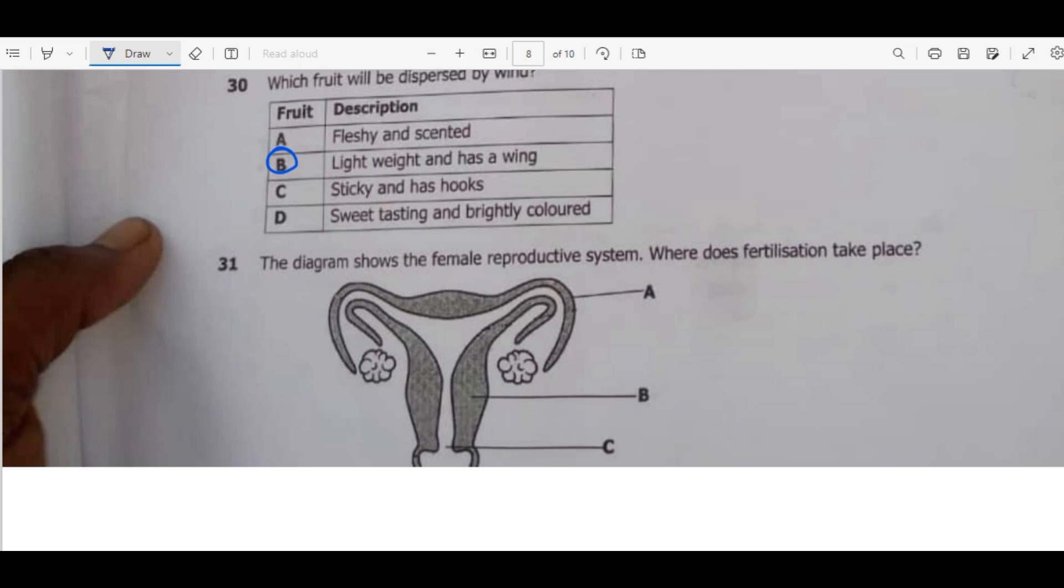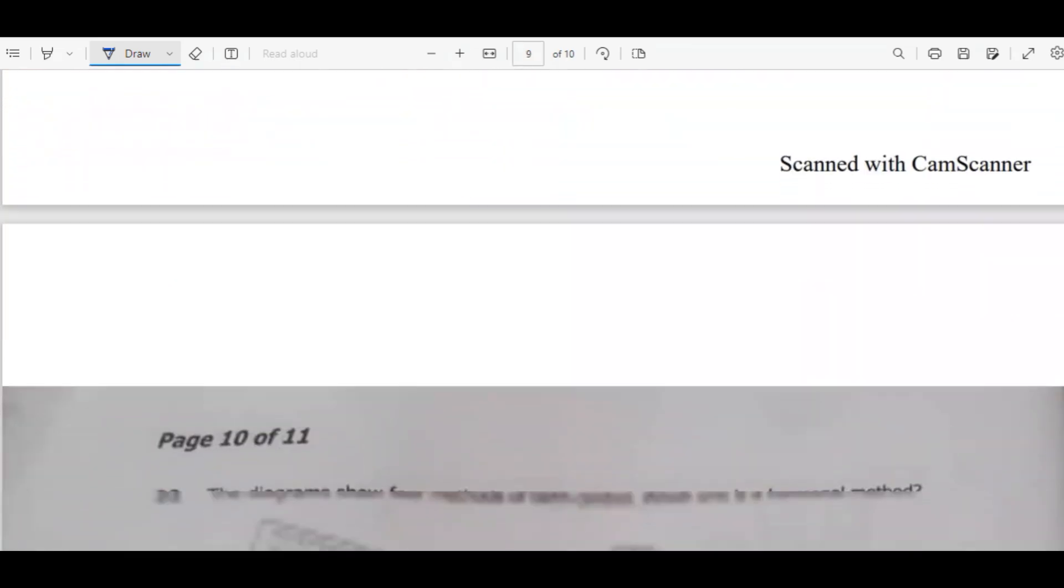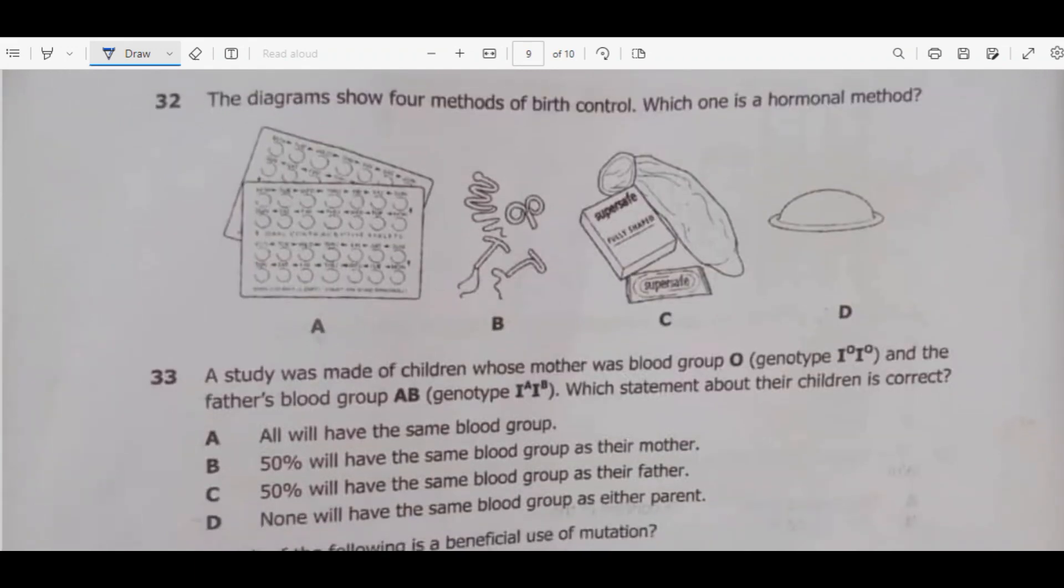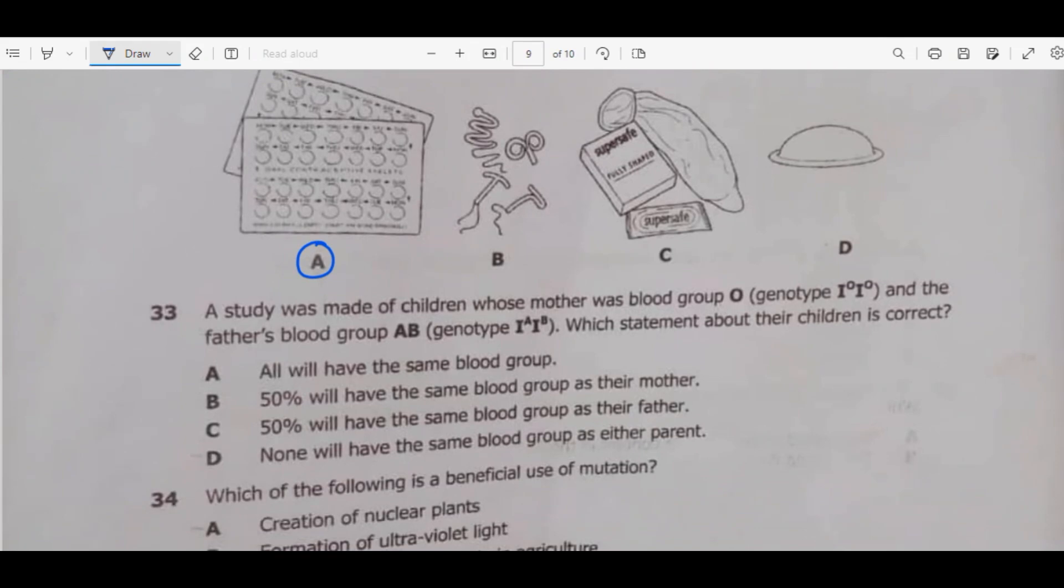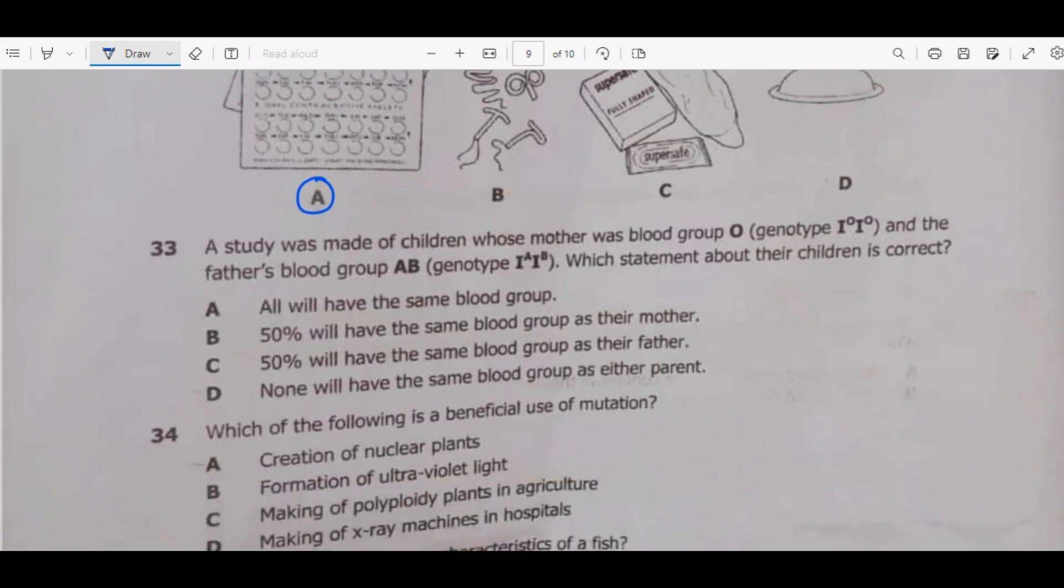The diagram shows the female reproductive system. Where does fertilization take place? Fertilization takes place in the fallopian tube, which is A. Question 32. The diagram shows four methods of birth control. Which one is hormonal method? We are looking for the one that uses hormones. So hormones has to do with pills. The other ones may involve surgical and we have the condoms there.